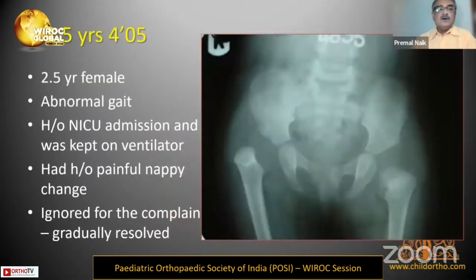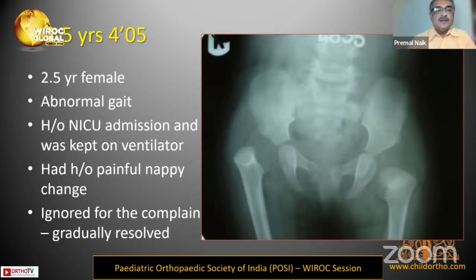This is how the patient generally presents. In this case, a girl of two and a half years was brought to me with abnormal gait. She had a history of NICU admission, was kept on ventilator, and had a painful nappy change which was ignored after multiple complaints. Both hips are abnormal; on the right side the capital femoral epiphysis is not present.